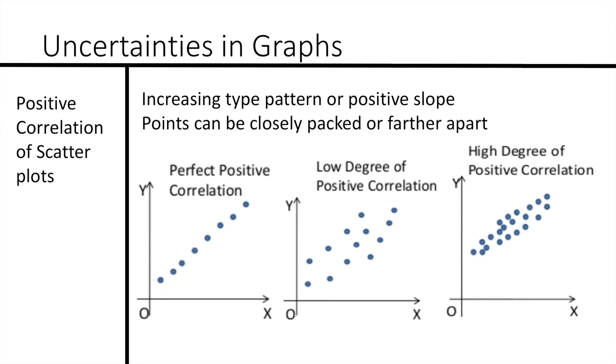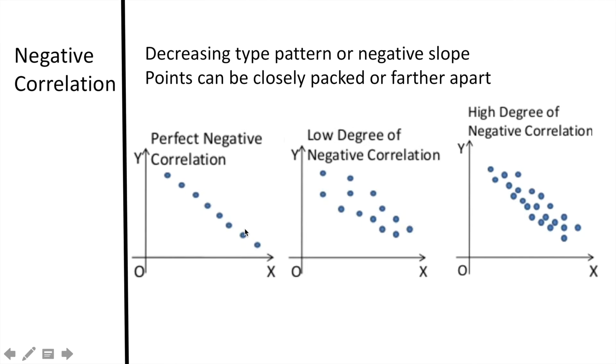The first kind of pattern the graph can have is where the pattern increases upwards and has a positive slope. If the points create a fairly straight line through all the points, it would be a perfect positive correlation. The points can also be more spread out, but if there is an upwards progression of these points, then this would have a low degree of positive correlation. The closer that the dots are to each other, alongside the upwards trend as shown here, we would then state that this graph has a high degree of positive correlation.